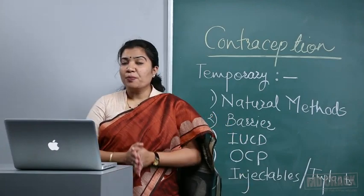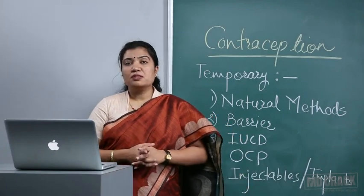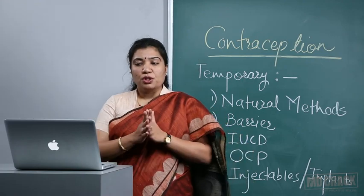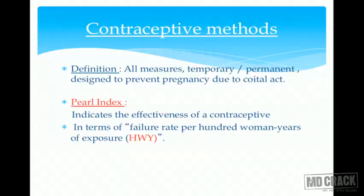Today we'll cover a big topic: contraception and family planning methods. A contraceptive method, by definition, is a method — it may be temporary or permanent — which is designed to prevent pregnancy due to the coital act.